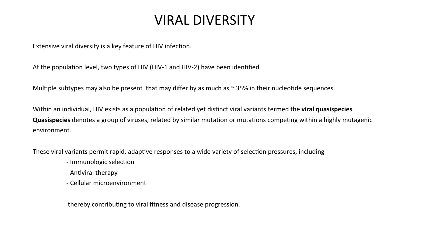Extensive viral diversity is a key feature of HIV infection. At the population level, two types of HIV — namely HIV-1 and HIV-2 — have been identified. Multiple subtypes may also be present that differ by as much as 35 percent in their nucleotide sequences. Within an individual, HIV exists as a population of related yet distinct viral variants, termed viral quasi-species.